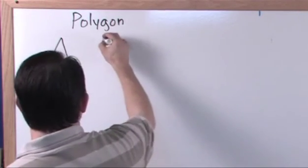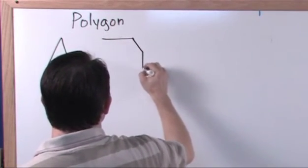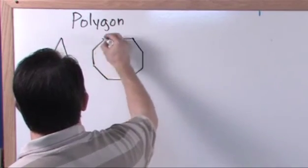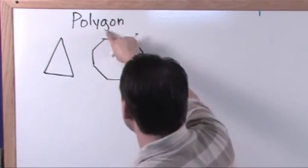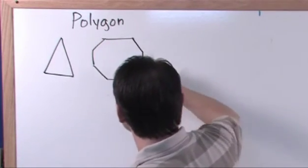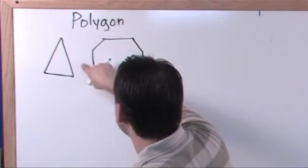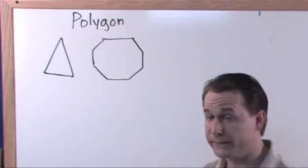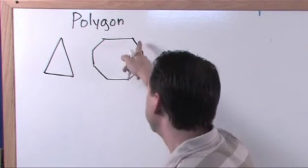Another polygon would be something like you see at the stop sign. That's a polygon. It's got multiple sides. The sides intersect only at their end points. None of the sides are curved, all of these sides are straight. So this is a polygon.